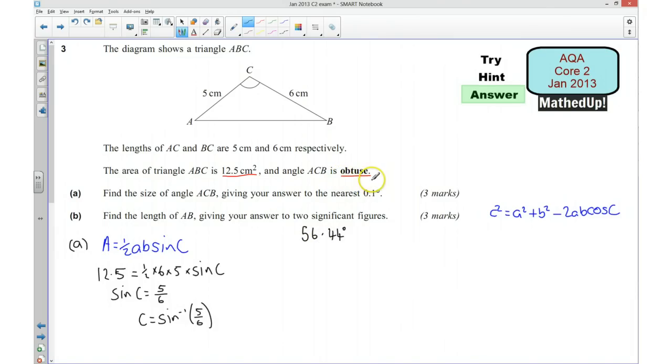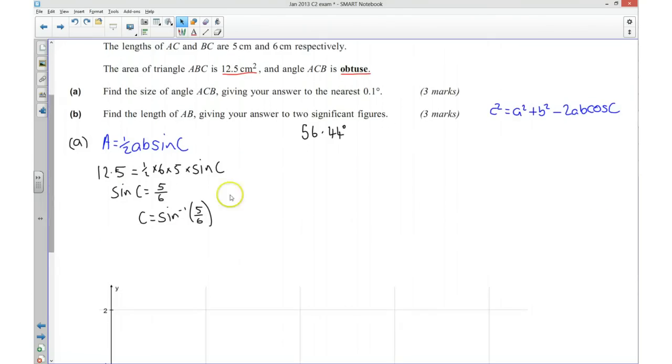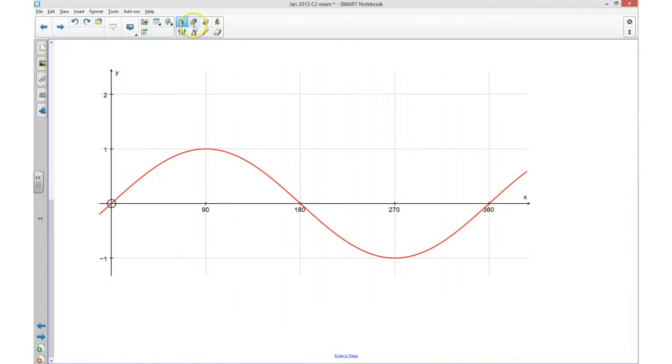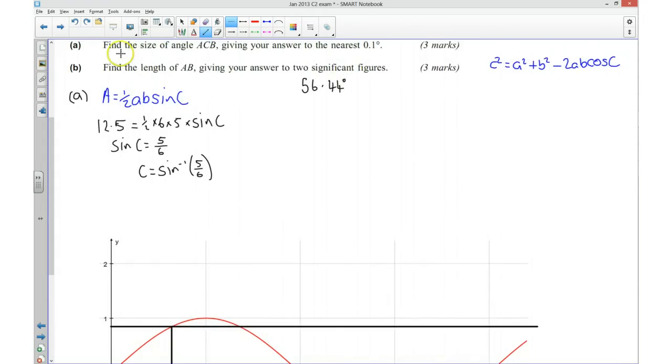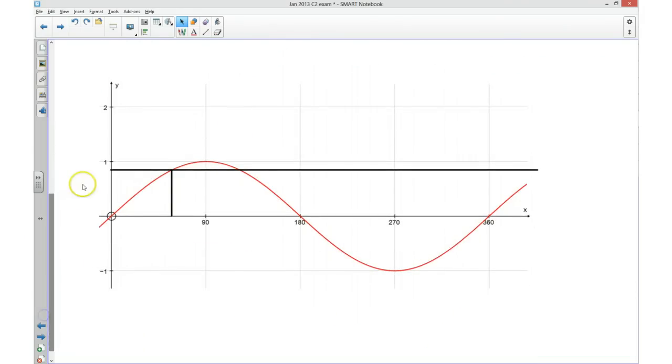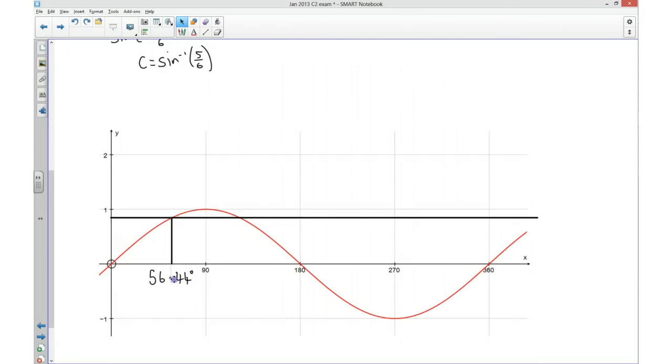But reminding ourselves in the question we're asked to find an obtuse angle and this is quite clearly an acute angle. So what we need to do is we need to think about the graph of our sine function. And over here I've got the graph of my sine function. And what we've done is we've found the angle or we've got the ratio 5 sixths, and that's from our calculator we've got this angle here which is 56.44 degrees. So I'm looking to find this angle here. Now what we're after though is we're after this angle here because we want the obtuse angle. So I'm looking to find this angle here.